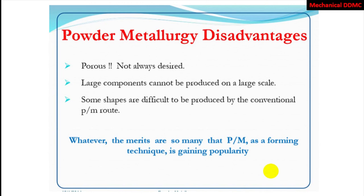Whatever the limitations, the merits are so many that powder metallurgy as a forming technique is gaining popularity — mostly due to its quality, sequence of operation, and the strength we get from the final product. Most mechanical production companies are using these techniques for the production of very important and high-value parts. Even washers, car engine shapes, different car engine parts, and special engines are being manufactured through these powder metallurgy techniques.